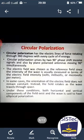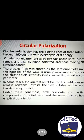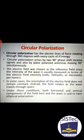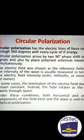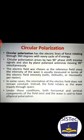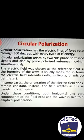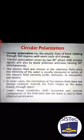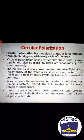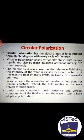The electric field was chosen as the reference field since the intensity of the wave is usually measured in terms of the electric field intensity — in terms of volts, millivolts, or microvolts per meter. In some cases, the orientation of the electric field does not remain constant. Instead, the field rotates as the wave travels through space. Under these conditions, both horizontal and vertical components of the field exist and the wave is said to have elliptical polarization.